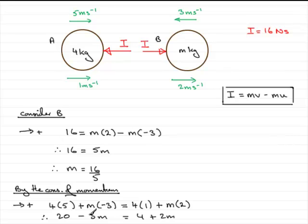And if I add 3m to both sides and take 4 from both sides, can you see that we get, and I'll just come down through here, we get 20 take away 4 which is 16 equals 5m.